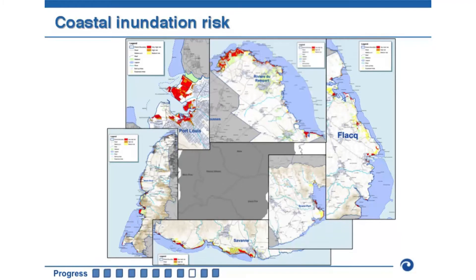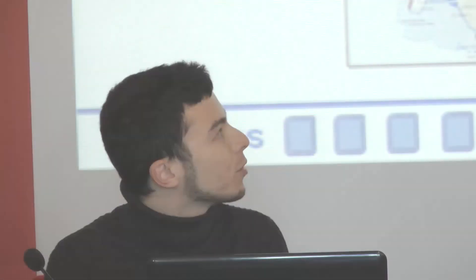After that, we identified the risk areas. This is an example with coastal inundation. For each sector, we produce a simple interpretation of geographically located risk that is easy to understand by the government — a simple risk scale, of course.